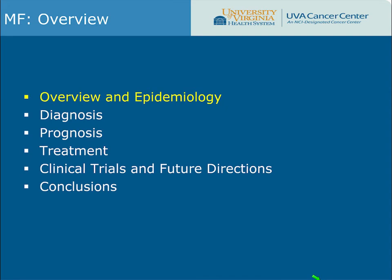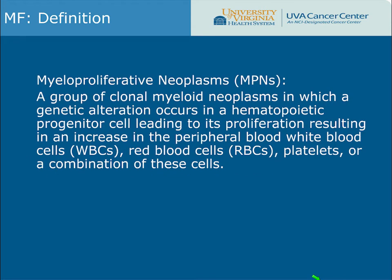We'll start with an overview and epidemiology. Myelofibrosis is a subcategory of myeloproliferative neoplasms, or MPNs. MPNs are a group of clonal myeloid neoplasms in which a genetic alteration occurs in a hematopoietic progenitor cell, leading to proliferation and an increase in peripheral blood white blood cells, red blood cells, platelets, or a combination. In simple terms, MPNs are cancers that lead to too much production of one or more blood cell counts.